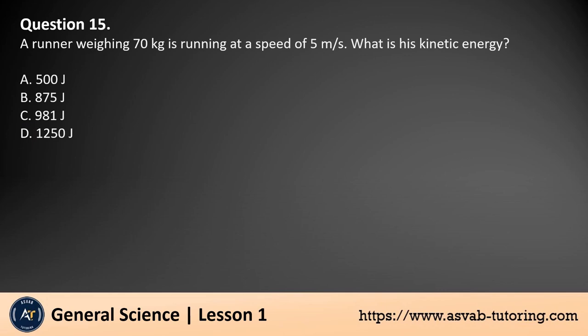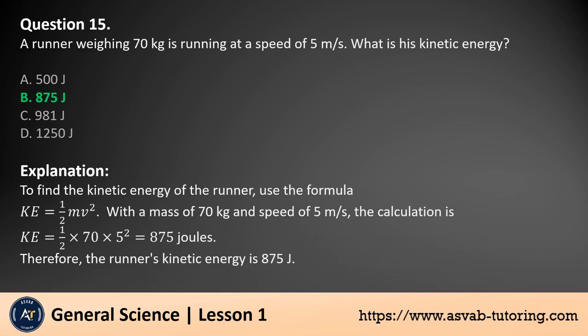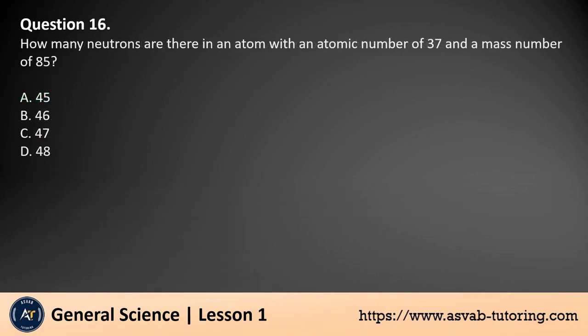Question 15. A runner weighing 70 kg is running at a speed of 5 meters per second. What is his kinetic energy? a. 500 joules. b. 875 joules. c. 981 joules. d. 1250 joules. The answer is b. To find the kinetic energy of the runner, use the formula: kinetic energy is equal to half of mass times velocity squared. With a mass of 70 kg and speed of 5 meters per second, the runner's kinetic energy is 875 joules.